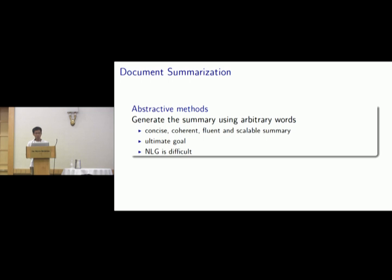Extractive methods are able to keep the salient content and provide fluent sentences, but also face the drawbacks of incoherent discourse and redundant information. Relatively, abstractive methods aim to generate the summary using arbitrary words and ideally are able to produce concise, coherent, fluent, and scalable summaries. This is the ultimate goal of document summarization research. However, abstractive methods are previously less studied because natural language generation is usually very difficult.